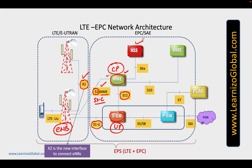The MME also interfaces with the HSS, Home Subscriber Server, for a variety of procedures related to the user. It also connects to another MME using the S10 interface, which helps MMEs know each other and communicate with each other for user context. The SGW connects to the PGW, PDN Gateway, and the PGW connects you to the external data network.